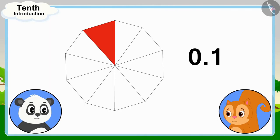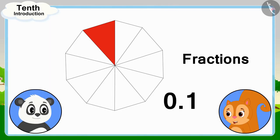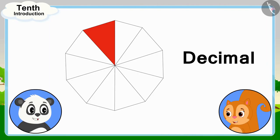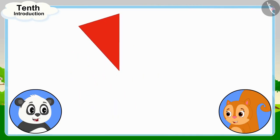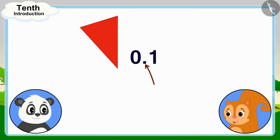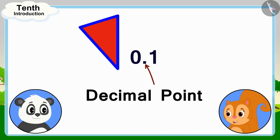Chanda could not understand anything. She said: I know about fractions, but what is this decimal? Chanda asked Golu. Golu said: Look Chanda, decimal means our whole is divided into 10 equal parts, and we are taking one part out of these 10 parts. And we write this after the decimal point like this.